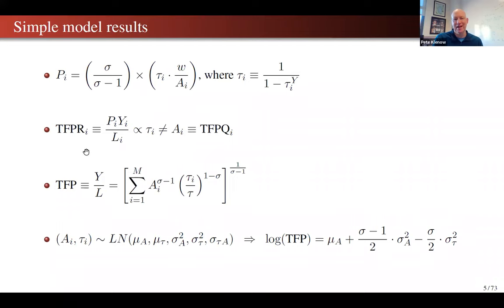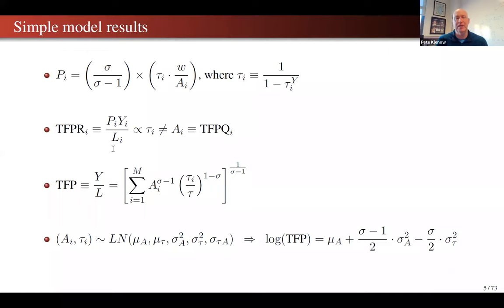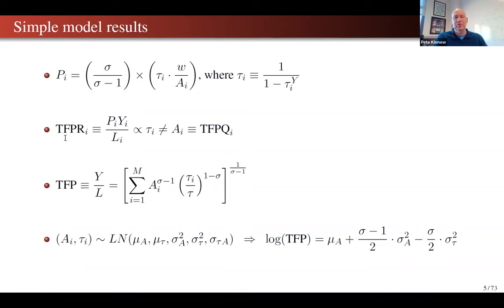Even if the tau happens to be correlated with TFPQ — say if governments tax large formal firms more than small firms — there's no endogenous underlying reason in this setup why TFPR would be connected to TFPQ. That's a stunning feature that generalizes: even away from these stark assumptions, TFPR isn't TFPQ. If you want to measure underlying efficiency, you need more than just revenue per unit of input, because that might reflect wedges, distortions, or markups.